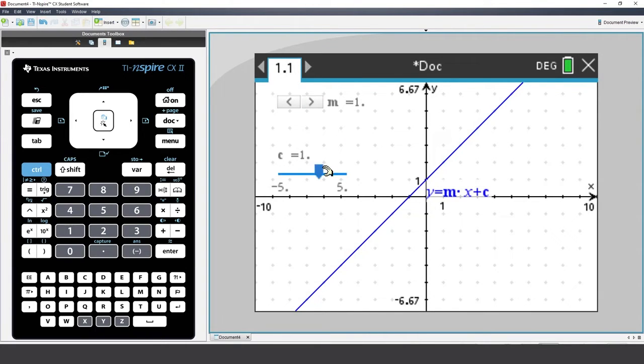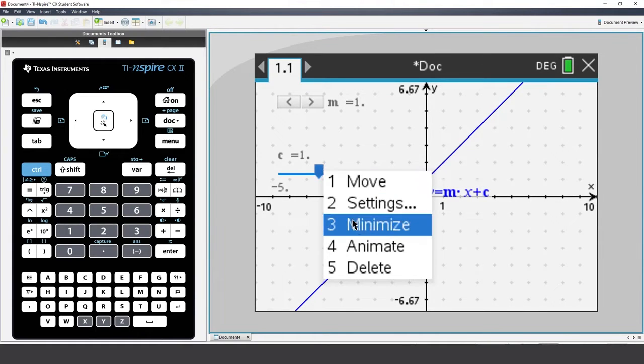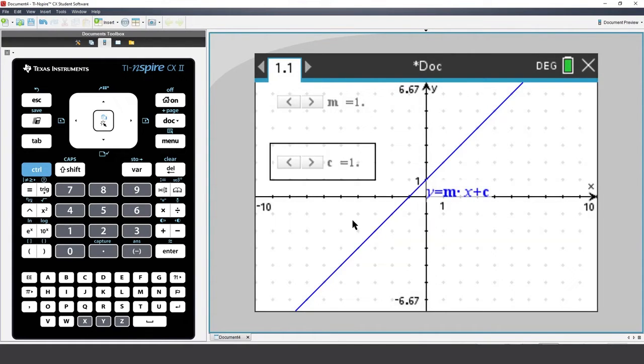Repeat this with slider c. Make sure you don't click on the slider value as we want to select the slider, not edit its value.